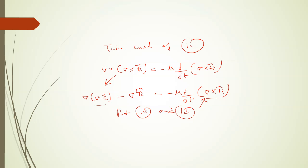Del dot E is zero, so this becomes zero. Minus del square E equals minus mu d by dt, del cross H is sigma E plus epsilon curly E by curly t.